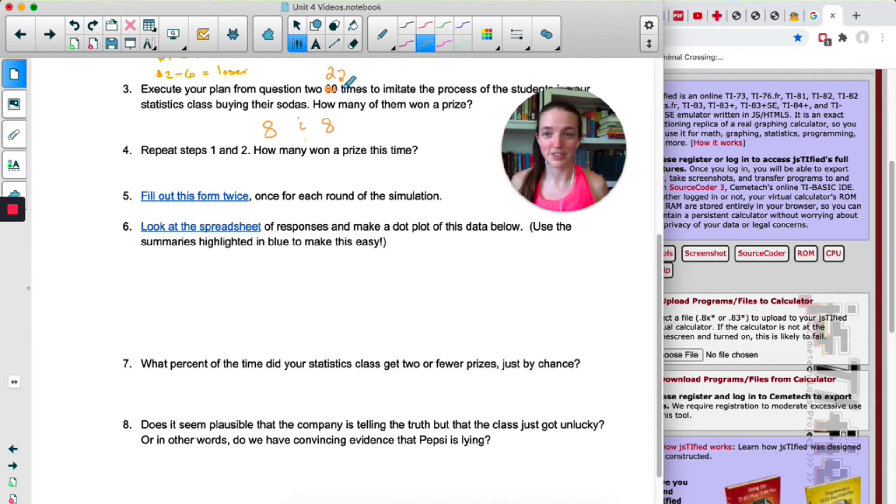Once you have those two rounds of the simulation, you're going to use this Google form to enter the number of winners that you got each round, and then you're going to look at the spreadsheet to see the responses. You can make a quick dot plot, just a sketch. It doesn't have to be perfect, and then try to answer questions seven and eight. As usual with some of these activities, my answers are going to be different than yours because I am doing this on July 17th and you are probably not, so you'll have probably more data than I do. But pause the video and do five, six, seven, and eight on your own.